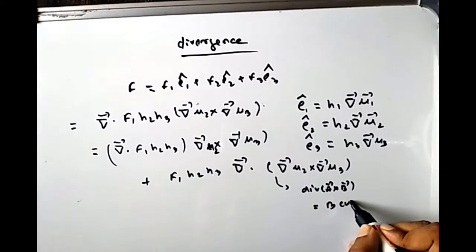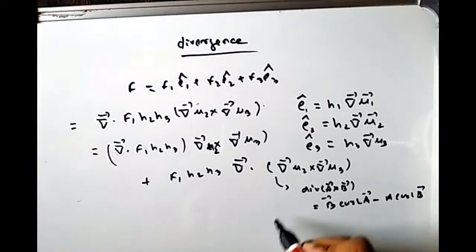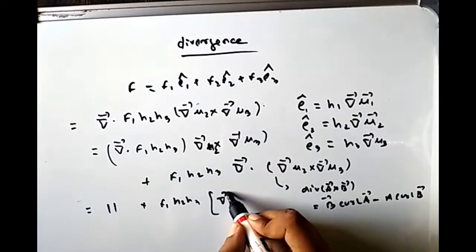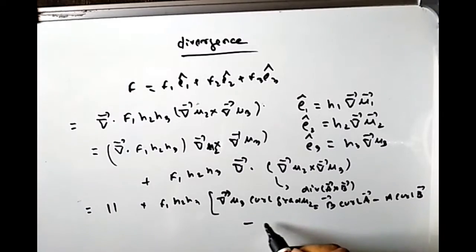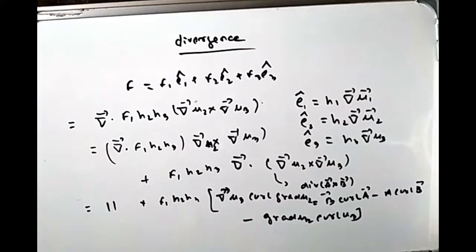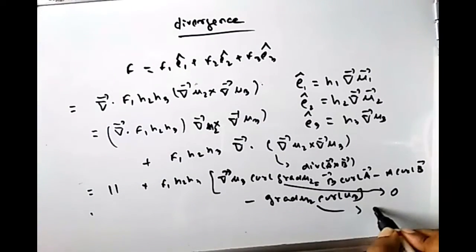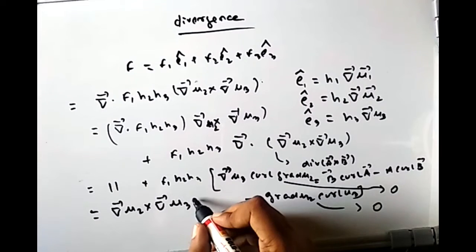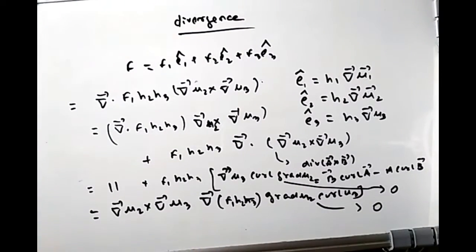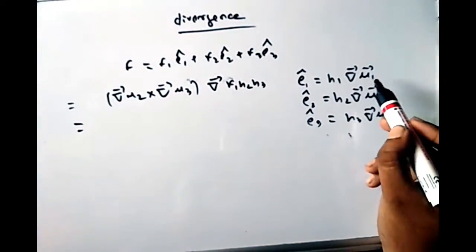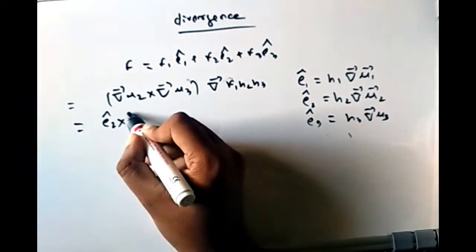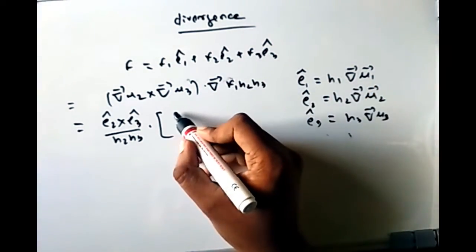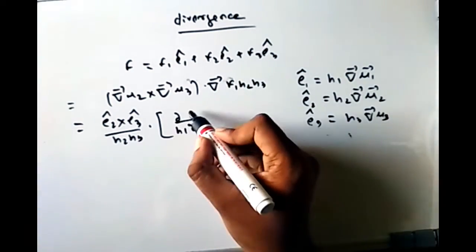Using the vector identity div(A × B) = B · curl A − A · curl B, and applying it to ∇u₂ × ∇u₃, we get F₁h₂h₃ terms involving curl(∇u₂) and curl(∇u₃). Since the curl of a gradient is always zero, those terms vanish, leaving only ∇u₂ × ∇u₃ · ∇(F₁h₂h₃).